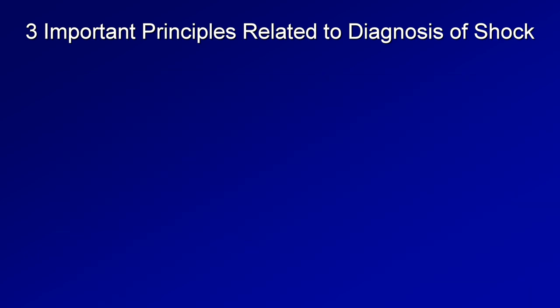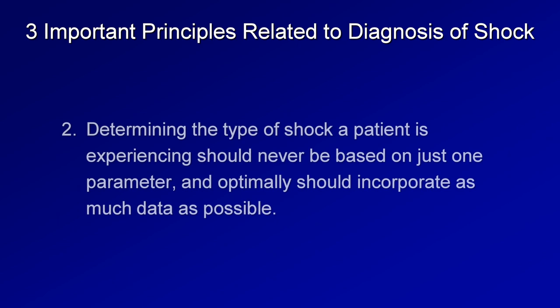The second important principle is that determining shock type should never be based on just one parameter and should incorporate as much data as possible. This is one of the most commonly cited reasons PA catheters don't seem to help most patients — doctors end up making important decisions based on a single number instead of considering the entire clinical picture.